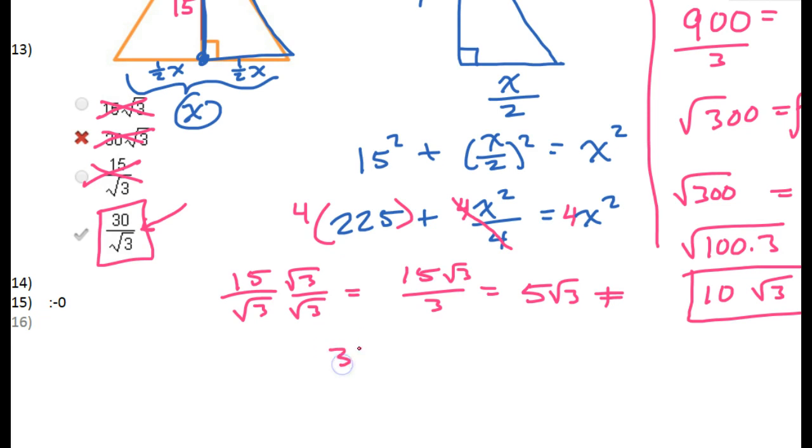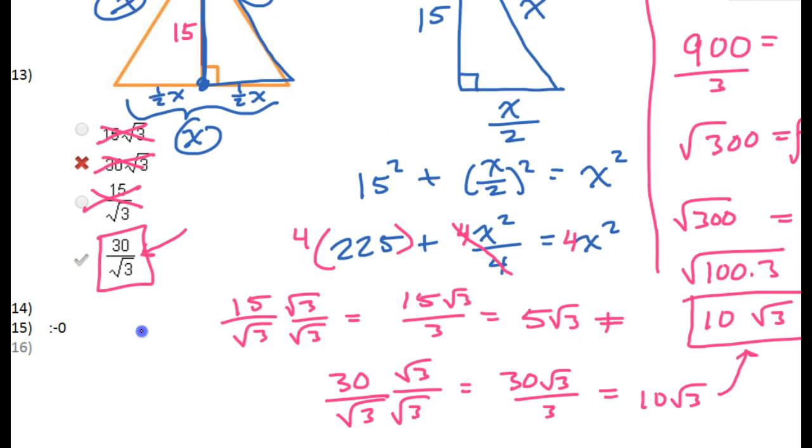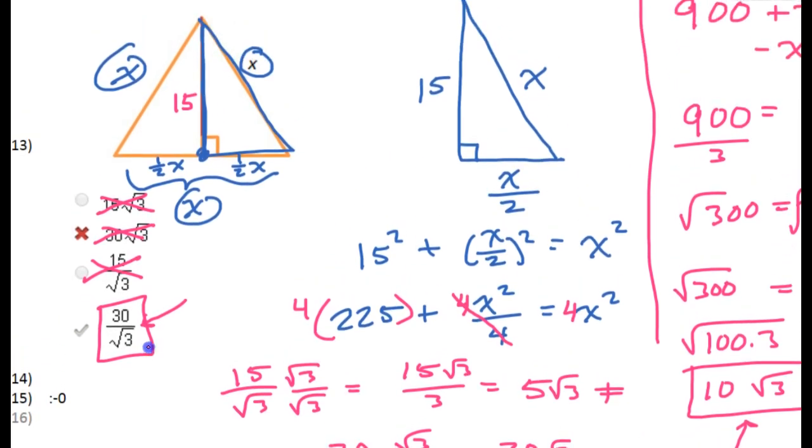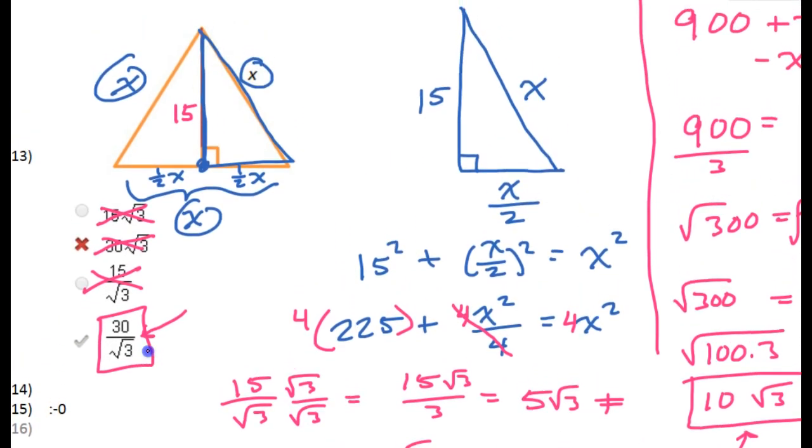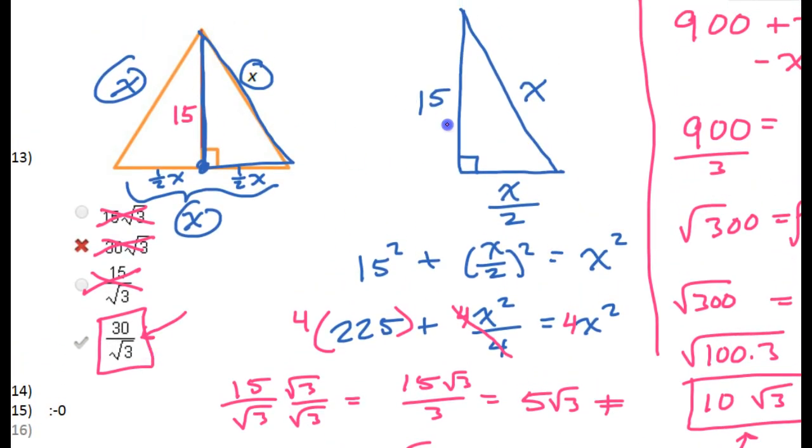But looking at this last one, again, let's rationalize the denominator. 30 over radical 3. If I multiply by radical 3 over radical 3, that's going to give me 30 radical 3 over 3. 30 divided by 3 is 10. That's 10 radical 3. That's the same thing as what we got. So this is the answer. Now I told you that the first way I showed you was going to be quicker. So if you know your special triangle knowledge, that's definitely the way to go.